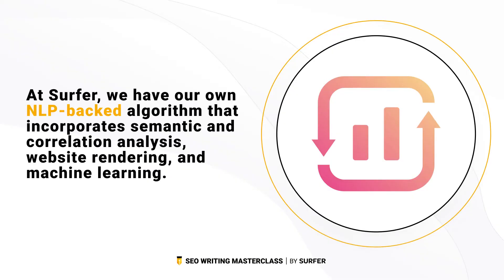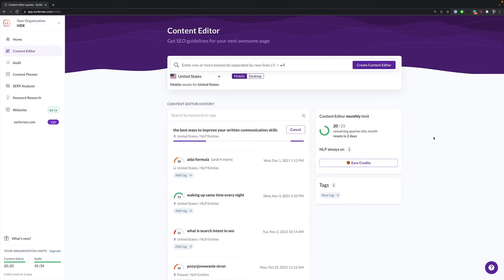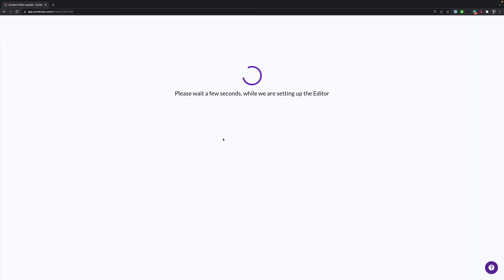So the big question is: how do you factor in all of these components without losing your head? Tools. Friends, you need tools. At Surfer, we have our own algorithm that incorporates semantic and correlation analysis, website rendering, and machine learning — so you can be sure our recommendations will always be super informed and data-driven. With our content editor, you can receive accurate guidelines on prominent phrases to use just by setting up a search for your keyword, and all of it happens in real time.